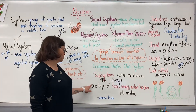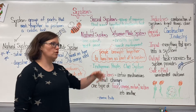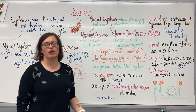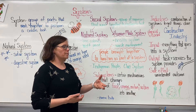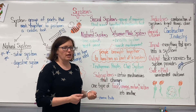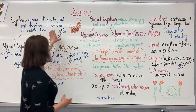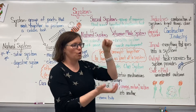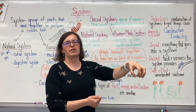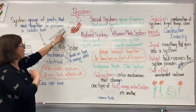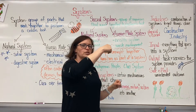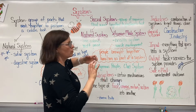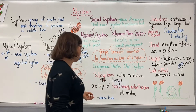Within every system there are subsystems. Those are the certain mechanisms that change one type of force, energy, motion, or action into another. So applying force to the handles of the can opener causes the mechanisms within the can opener to close down on the can. Turning the force used to turn that handle causes the teeth to spin around the top of the can. Those are mechanisms within a system that allow it to work.